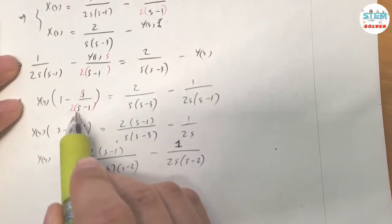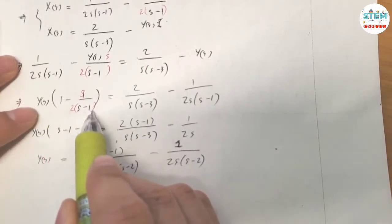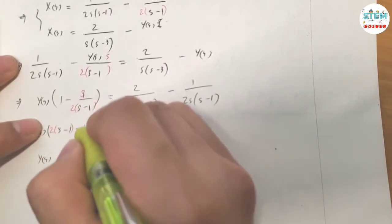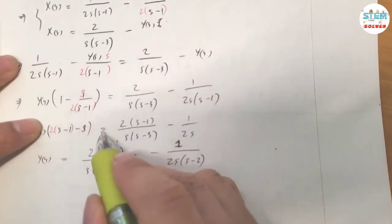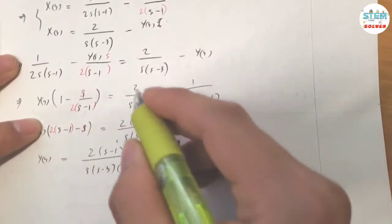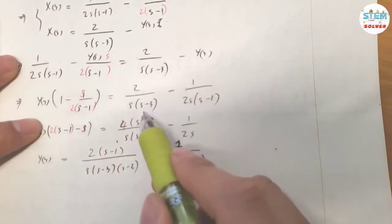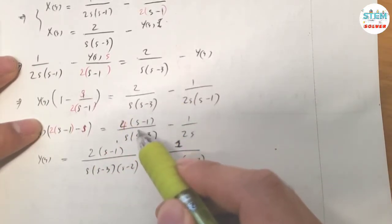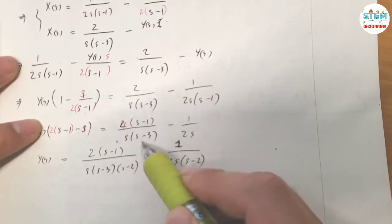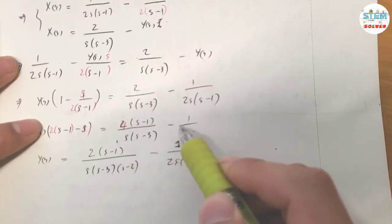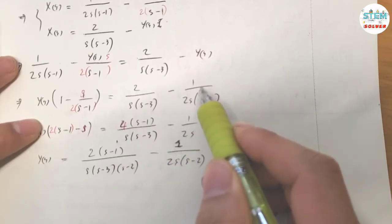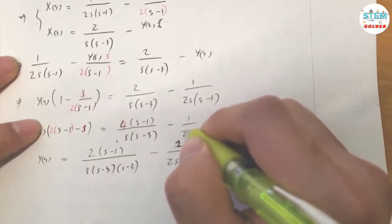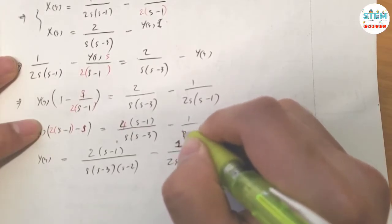Multiply both sides by 2(S minus 1). So we get 2(S minus 1) minus S equals 4 times (S minus 1) over S(S minus 3), minus two over two, which is one over S.